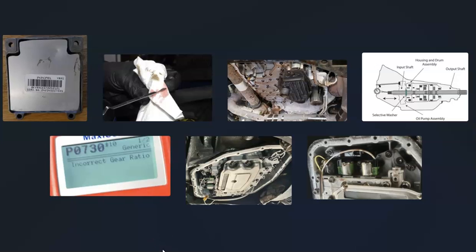That's basically it — a basic overview of how you go about fixing a vehicle with a P0730 code. If you have anything to add, please comment below. If you have questions, ask and I'll try to answer them. If this video helped you, please click like, subscribe, and have a good day.